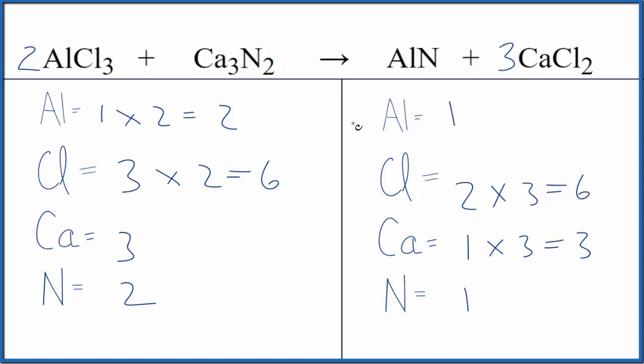And then for aluminum, I need two aluminums. Put a 2 here, 1 times 2 will give me 2, and then the 1 nitrogen times 2 gives me 2.